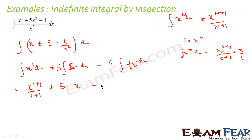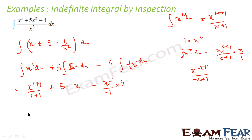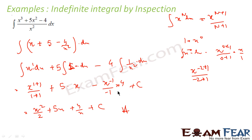Now 1/x² is x⁻², so integrating gives x⁻²⁺¹/(−2+1) = x⁻¹/(−1). With the constant 4 multiplied, the final answer is: x²/2 + 5x + 4/x + C, where C is the constant of integration we always add when integrating.